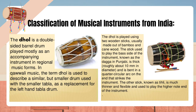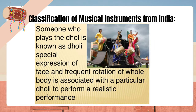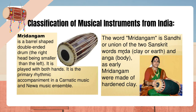The stick used to play the bass side of the dal, known as the daga in Punjabi, is thick, roughly about 10 millimeters in diameter, and is bent in a quarter-circular arc on the end that strikes the instrument. The other stick, known as tilli, is much thinner and flexible and used to play the higher note end. Someone who plays the dal is known as dholi. Special expression of face and frequent rotation of the whole body is associated with a particular dholi to perform a realistic performance. Mridangam is a barrel-shaped double-ended drum, the right head being smaller than the left. It is the primary rhythmic accompaniment in Carnatic music. The word mridangam is a union of two Sanskrit words: merda (clay or earth) and anga (body), as early mridangams were made of hardened clay.